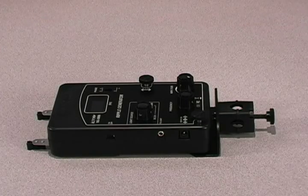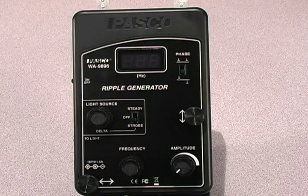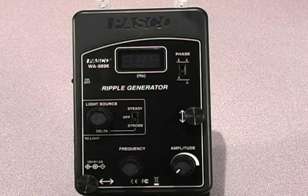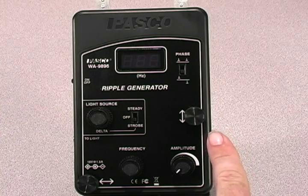And last but not least, the all new ripple generator that includes controls for the light source. This unique device lets you control the frequency, the amplitude, your light source, and fine adjust the position of your dippers.